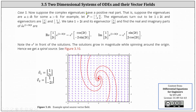Case five: now suppose the complex eigenvalues have a positive real part, that is, suppose the eigenvalues are a plus or minus iB for some a greater than zero. For example, for the two by two matrix P with entries 1, 1, -4, and 1, the eigenvalues turn out to be 1 plus or minus 2i, and the eigenvectors are the vectors (1, 2i) and (1, -2i). We take 1 + 2i and its eigenvector (1, 2i), and find the real and imaginary parts of V times e to the power of (1 + 2i)T, which are shown below. Notice the e to the T in front of the solutions. Because of this, the solutions grow in magnitude while spinning around the origin. Hence, we get what's called a spiral source.